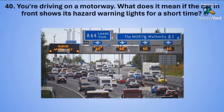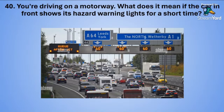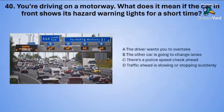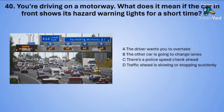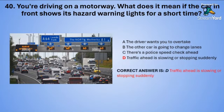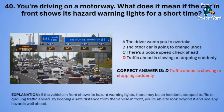Question forty: You are driving on a motorway. What does it mean if the car in front shows its hazard warning lights for a short time? A: the driver wants you to overtake. B: the other car is going to change lanes. C: there is a police speed check ahead. Or D: traffic ahead is slowing or stopping suddenly. The correct answer is D — traffic ahead is slowing or stopping suddenly.